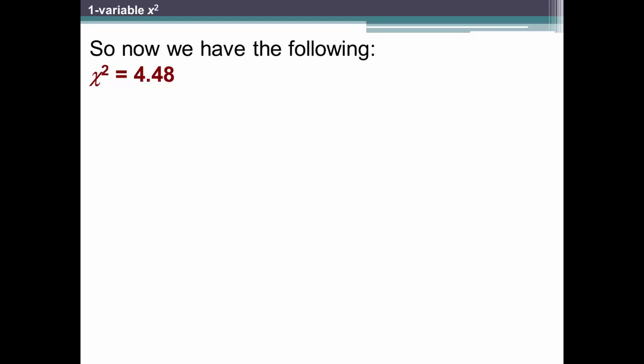From here on, the steps are the same as one variable chi-square. We already calculated the degrees of freedom using the formula of the number of rows minus 1 times the number of columns minus 1, giving us 2 degrees of freedom.